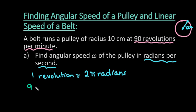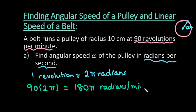Okay, so we would take 90 times 2π, which tells us that we get 180π radians per minute.